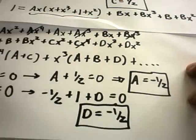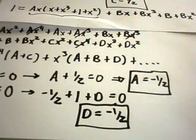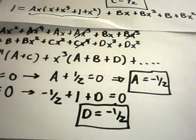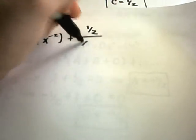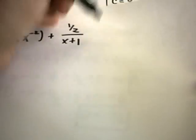Now let's rewrite the original integral and integrate. Using our partial fractions: a is negative 1/2 over x, plus b equals 1 times x to the negative second, plus c equals 1/2 over (x plus 1), plus d equals negative 1/2 over (1 plus x squared).